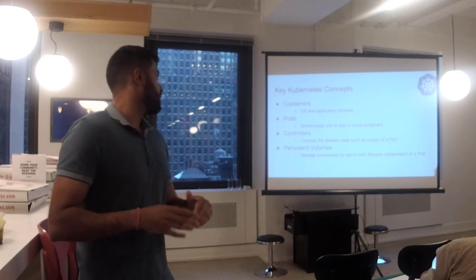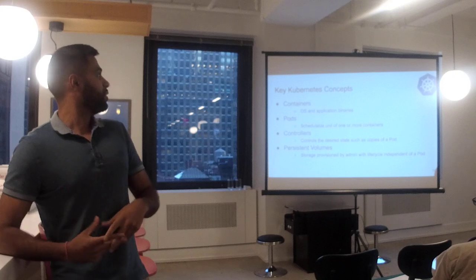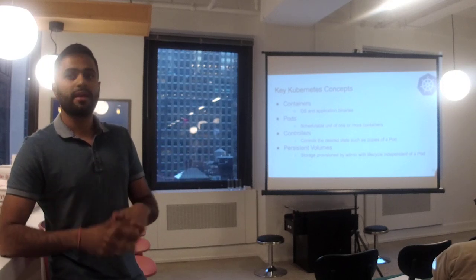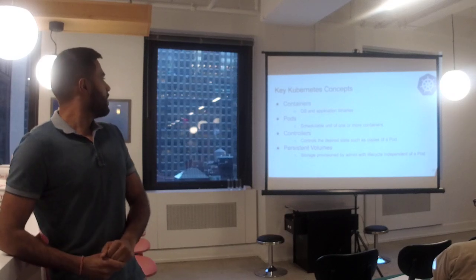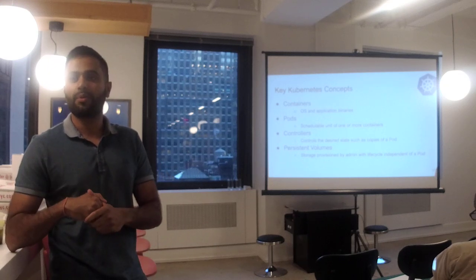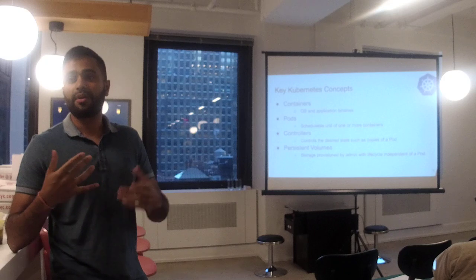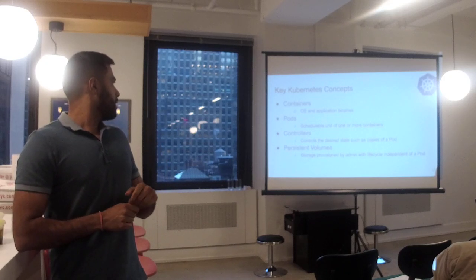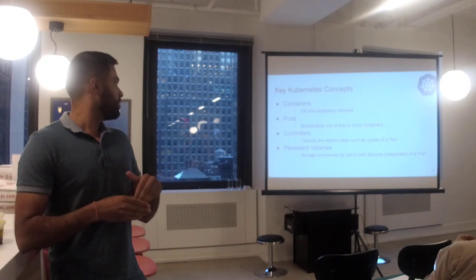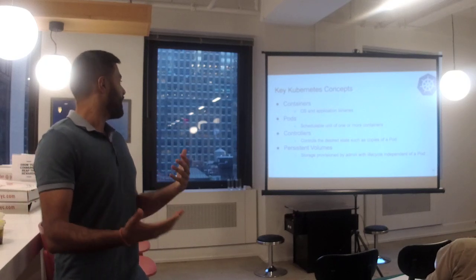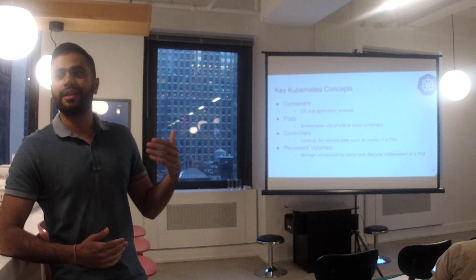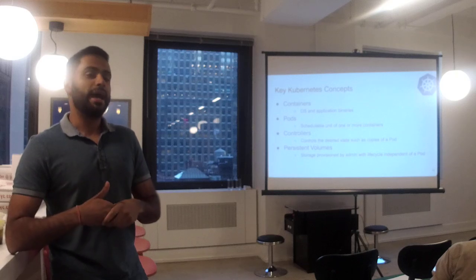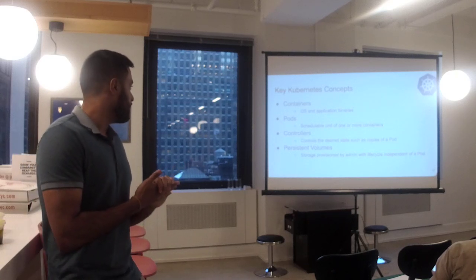Some key concepts we're going to talk about: containers are the actual OS or application binaries running on Kubernetes — the Alluxio master and workers are going to be running in separate containers on separate hosts. Pods are the actual scheduled unit of work for these containers — we'll be kicking off pods for Spark drivers and executors when we start the demo. Controllers maintain the state of the pod, and persistent volumes are storage provisioned by the K8s admin with a lifecycle independent of the pod. We use the persistent volume here to maintain the Alluxio embedded journal, which takes care of metadata changes and is what the standby master will pick up on if the primary master fails.